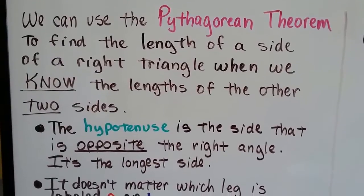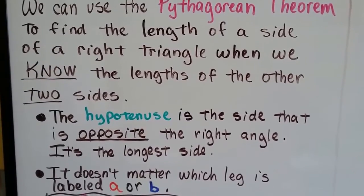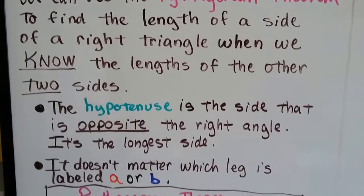We can use the Pythagorean Theorem to find the length of a side of a right triangle when we know the lengths of the other two sides.